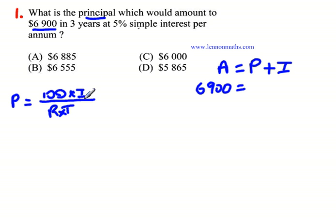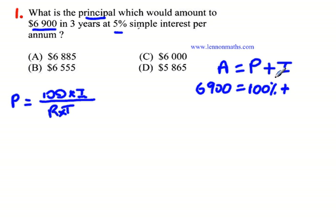But again, we don't have the interest. What we have is the rate, which is 5%, and the time, which is three years, but we don't have the interest. What we have is an amount after the three-year period. But we know the original amount is 100%, and the interest is 5% every year for three years — that's a total of 15%.